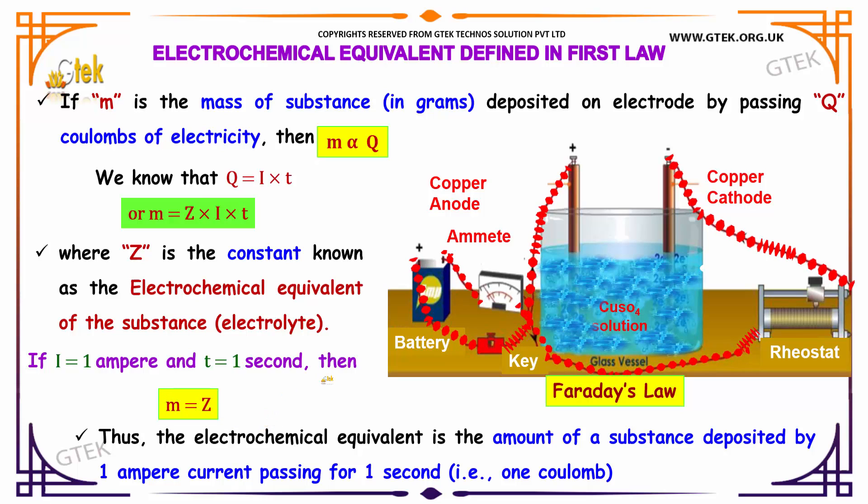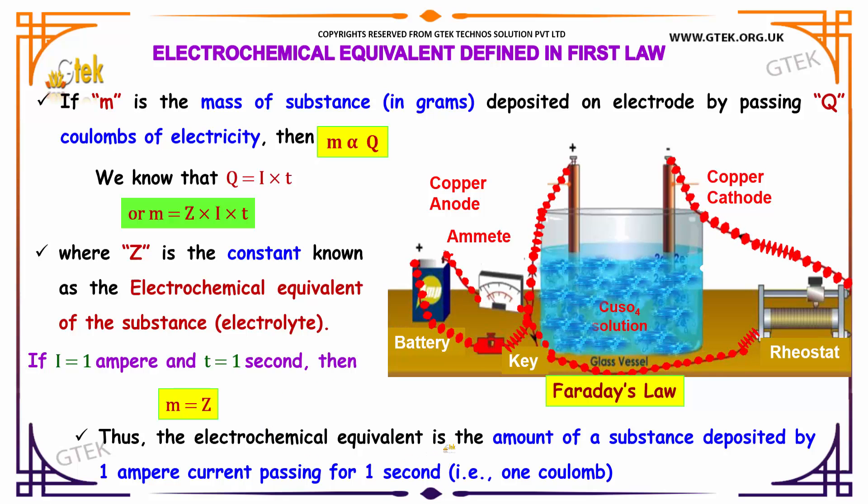Thus the electrochemical equivalent is the amount of substance deposited by 1 ampere current passing for 1 second, i.e., 1 coulomb.